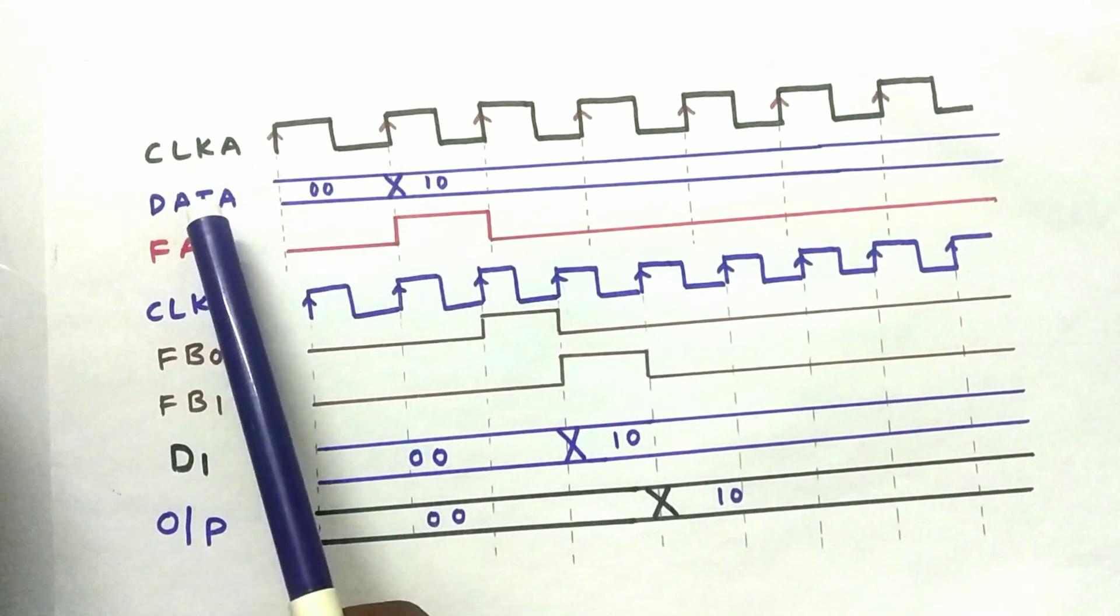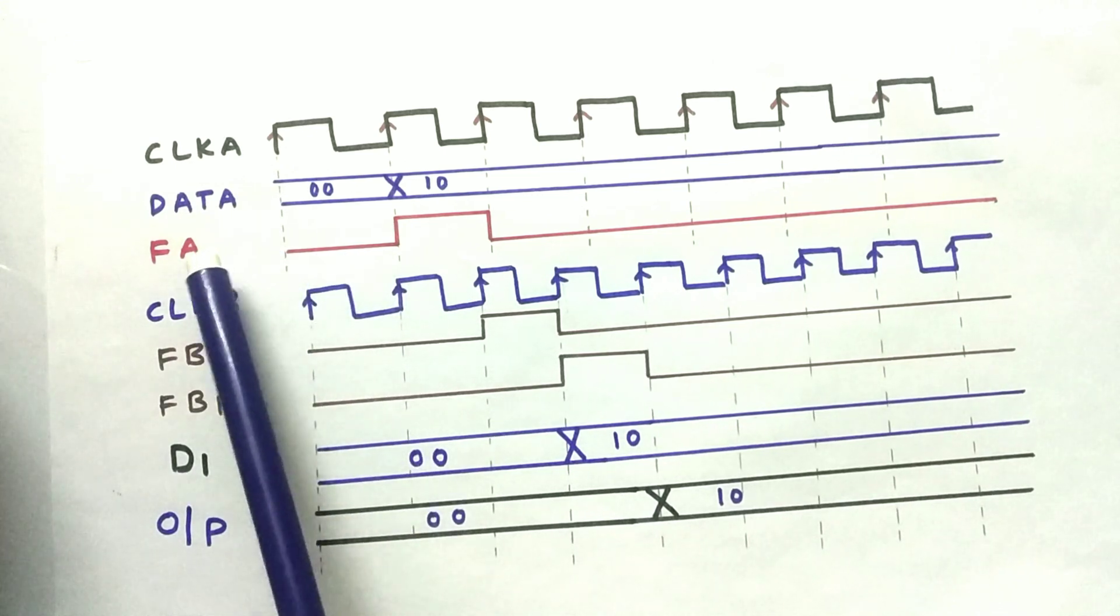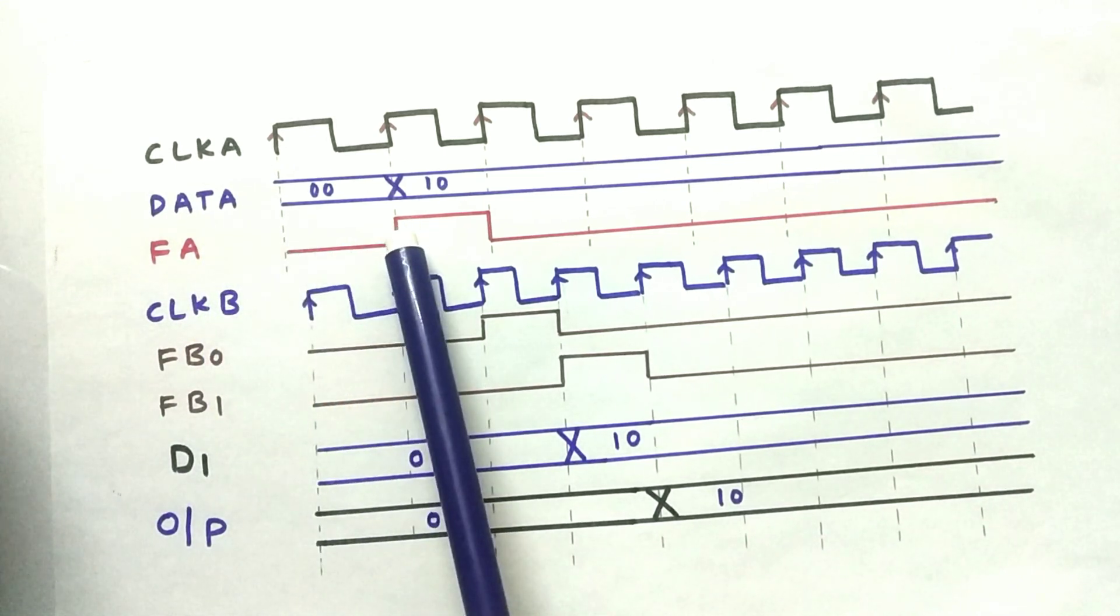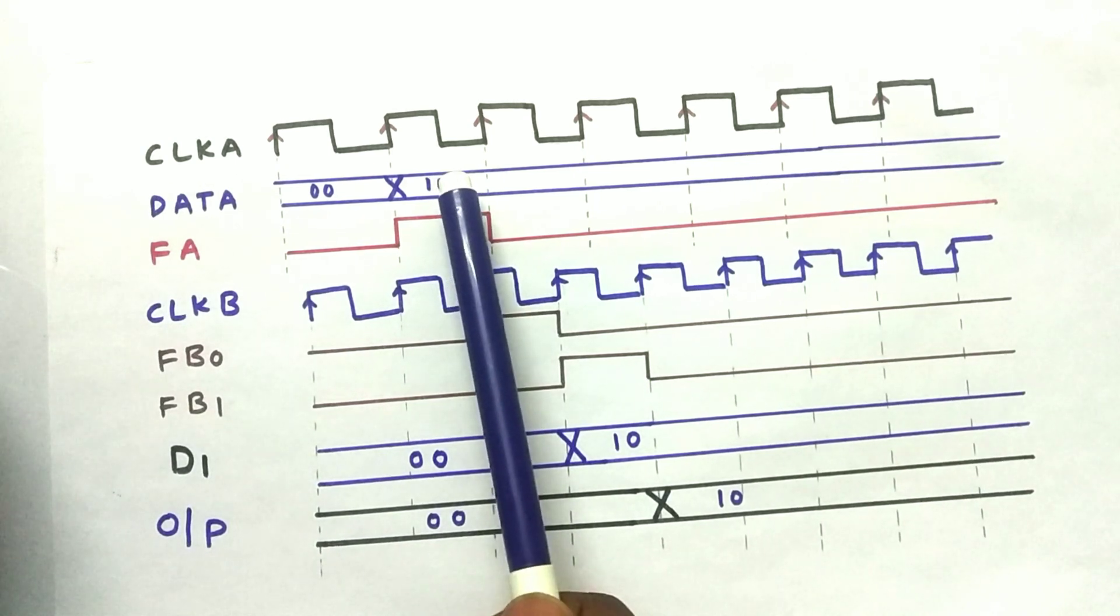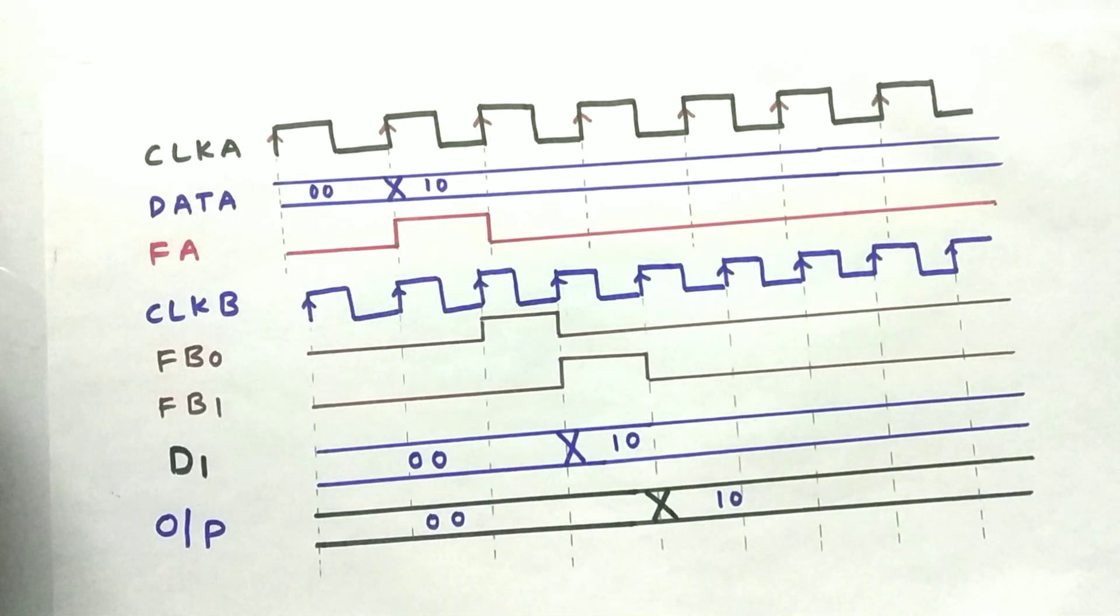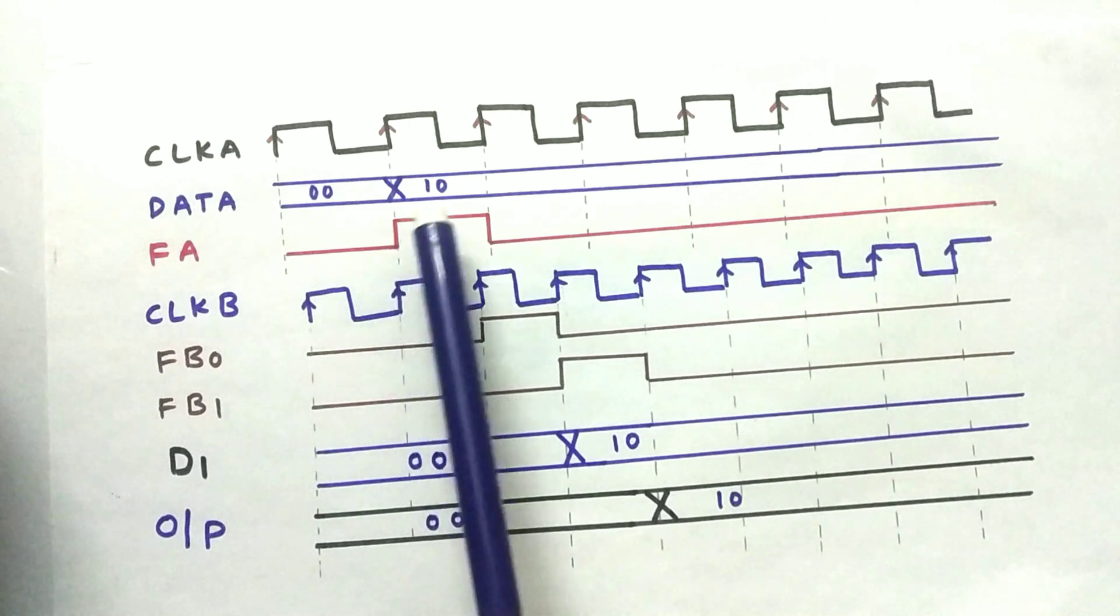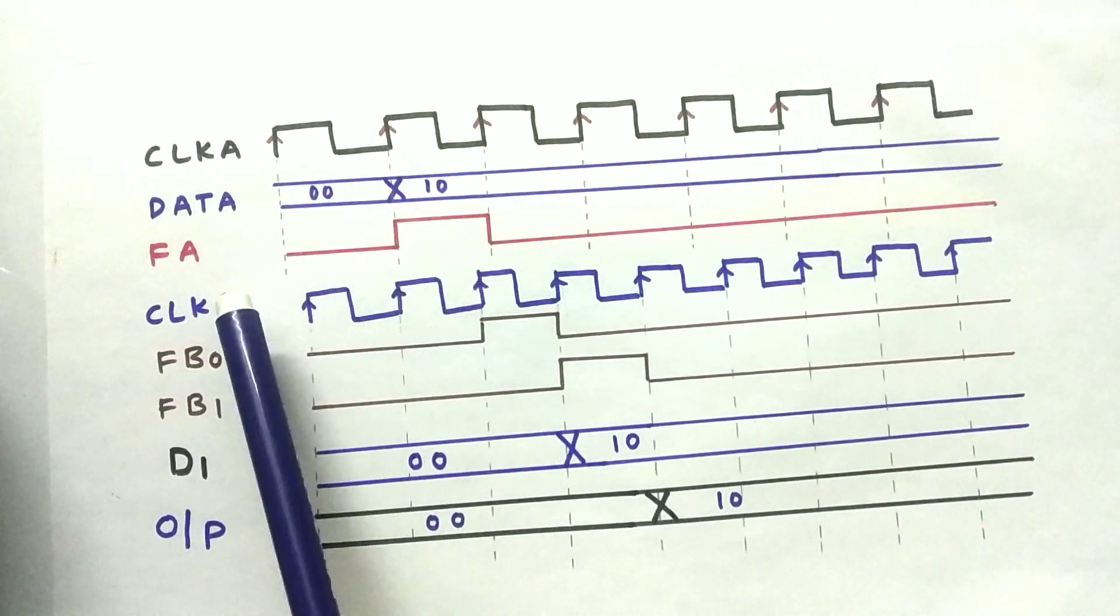To send the data, we need to send the enabled signal. The output of the flip-flop A is the enabled signal. This enabled signal and data will be sent to clock B domain. To do that, we need to send this enabled signal and synchronize it into clock B domain.